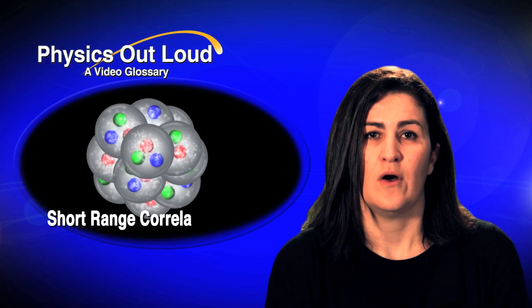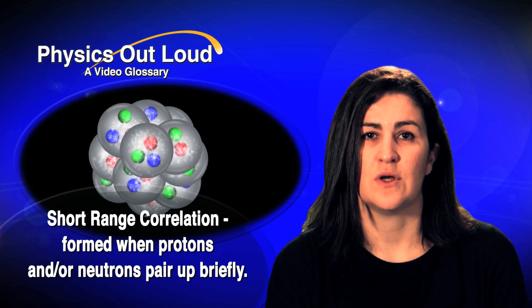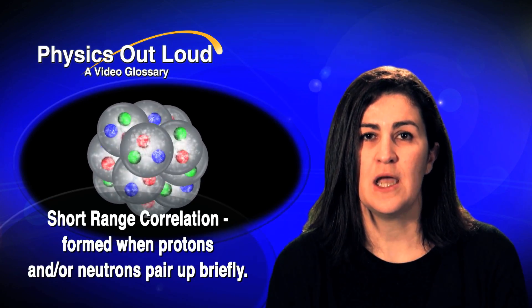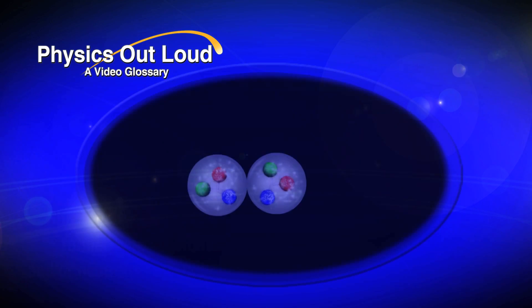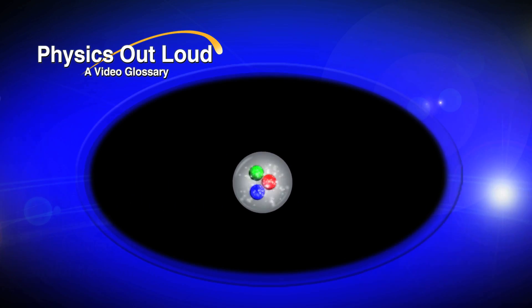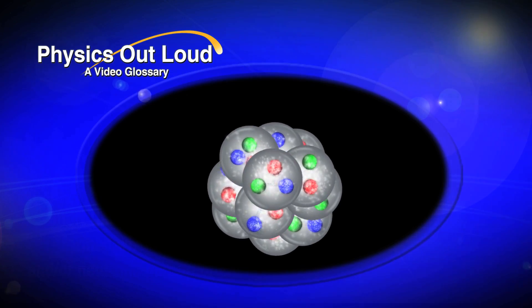So this pair of proton-neutrons, or two protons, or two neutrons is called short-range correlation. It is very important that we know how often that happens to have a better understanding of the nucleus.